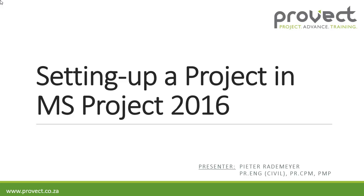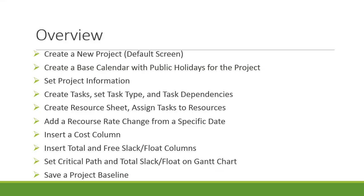In this video I'll be showing you how to set up a project in Microsoft Project 2016. We will be looking at creating a new project, creating a base calendar, setting project information, creating tasks, the task type and task dependencies, creating a resource sheet and assigning tasks to resources, adding a resource rate change, inserting the cost column, total and free slack columns, setting the critical path and the total slack in the Gantt chart, and saving a baseline.